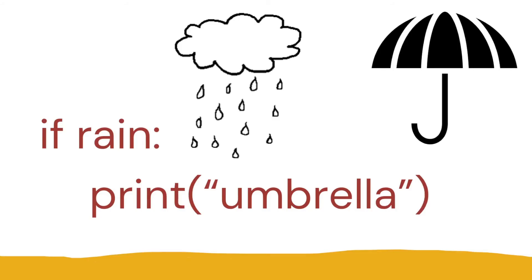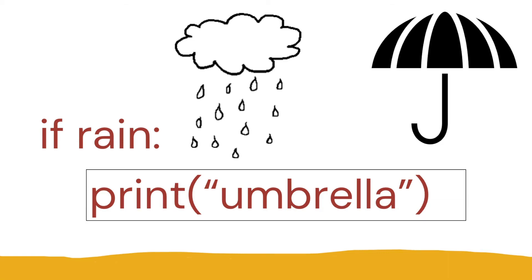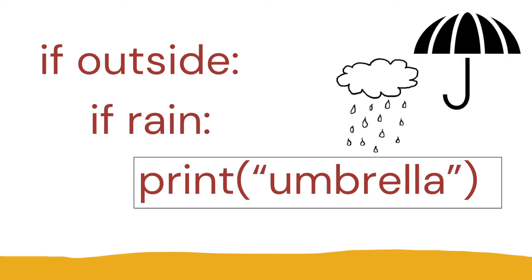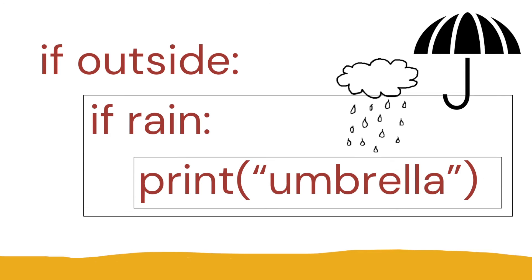Let's look at some examples. Going back to our if rain statement, we have a print umbrella code block inside. That's only relevant if it's outside. So if we put an 'if outside' first, then 'if rain, print umbrella' will only run if outside is true. So print umbrella is part of the if rain, and the if rain with print umbrella is part of the if outside — they are nested.